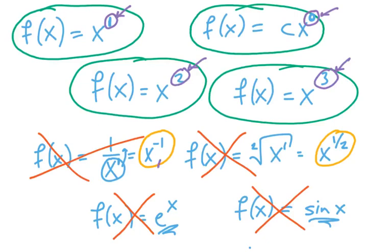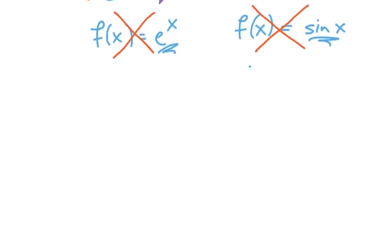So that's why x to the negative one is out for polynomial because it's negative. x to the one-half is out because it's a fraction, not a whole number. So let me write that a little bit more formally.